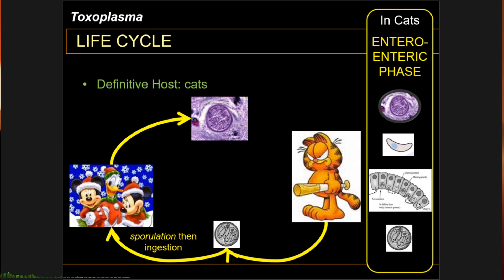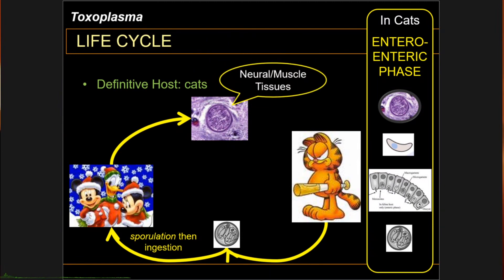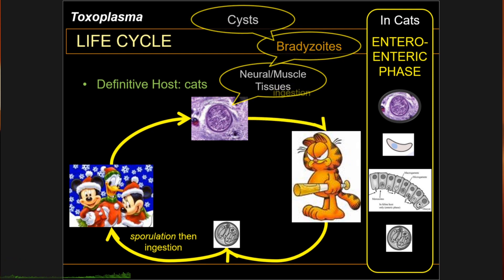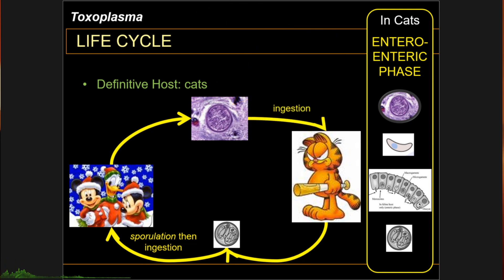Inside these tissues, tachyzoites then become bradyzoites. The bradyzoite form does not multiply rapidly compared to the tachyzoite. Bradyzoites can be found in neural and muscle tissues and form cysts which are resistant to the immune system of the host. To complete the life cycle, the infected intermediate host gets ingested by the definitive host, the cat, and upon ingestion, the cyst wall is degraded by gastric acid and the cycle enters the enteroenteric phase once again.